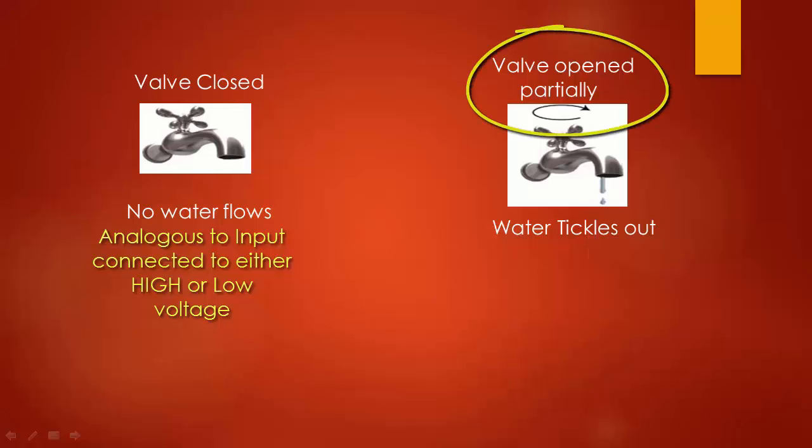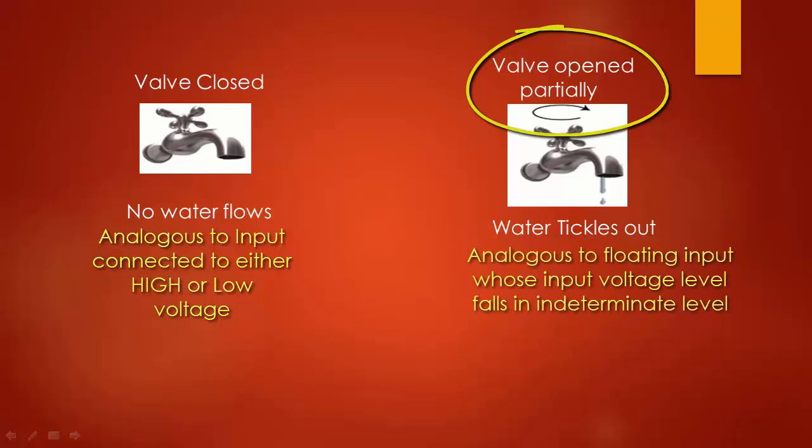Look at this valve. Here water leaks because the valve is partially closed. This corresponds to the floating input which picks up random voltage which turns on both transistors with resistance. As a result, there will be a small amount of current which leaks from VCC to the ground.